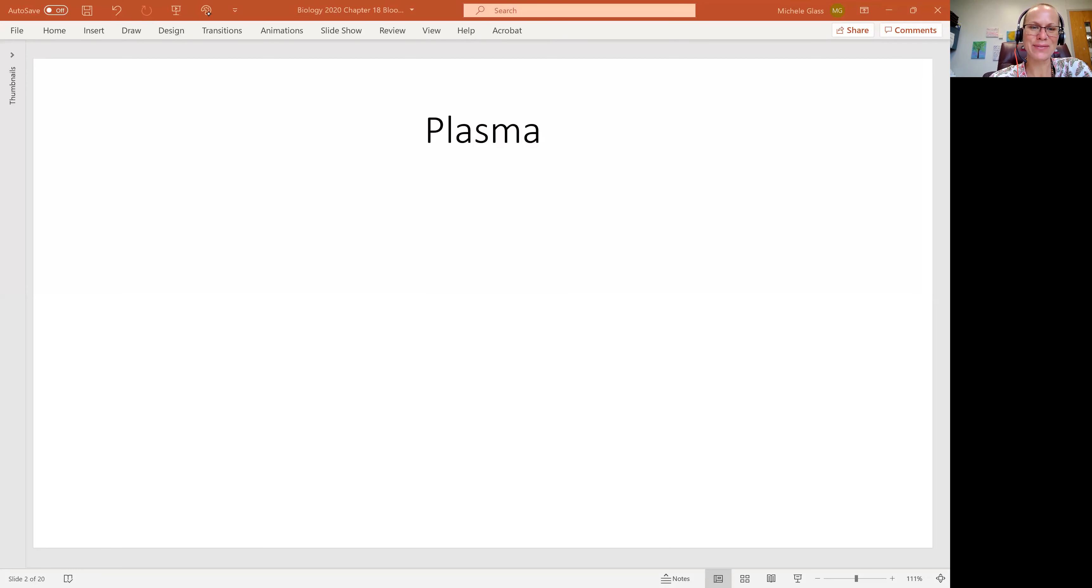Hello, my lovely anatomists and physiologists. Welcome back. We are still talking about our blood from chapter 18. Remember we talked about blood as a connective tissue, which means it's made up of specialized cells in a ground matrix.